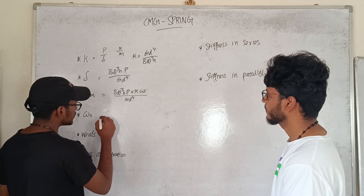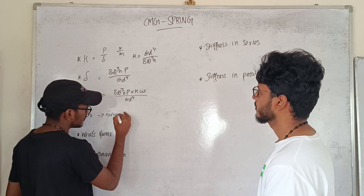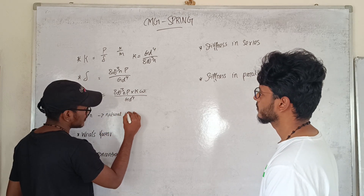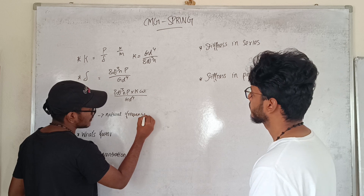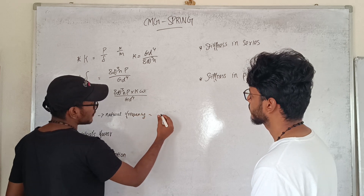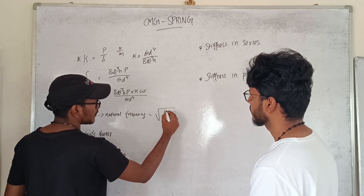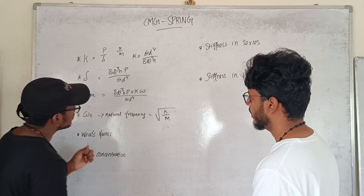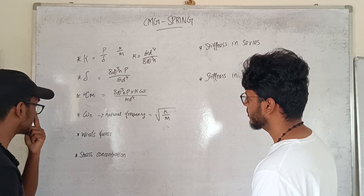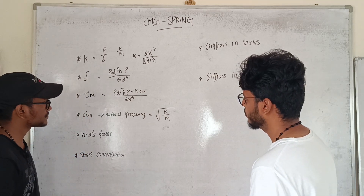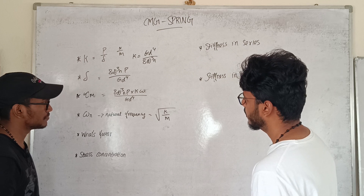Omega n is the natural frequency. The formula for natural frequency is omega n equals the root of k divided by m, which is the root of stiffness divided by mass.